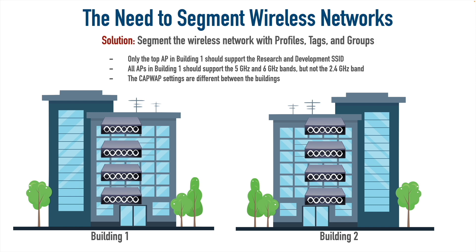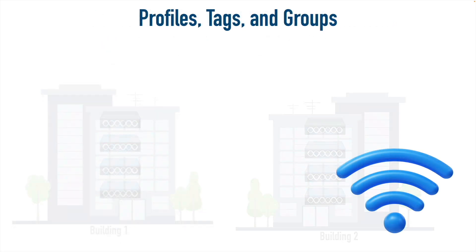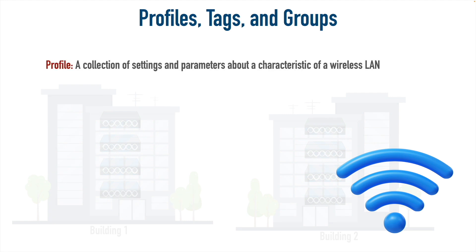The solution is to segment our wireless networks with profiles, tags, and then group access points together that share the same set of tags. First, let's consider a profile. There are different categories of profiles, and each category describes a particular characteristic of our wireless network, with a set of parameters we can configure within it.